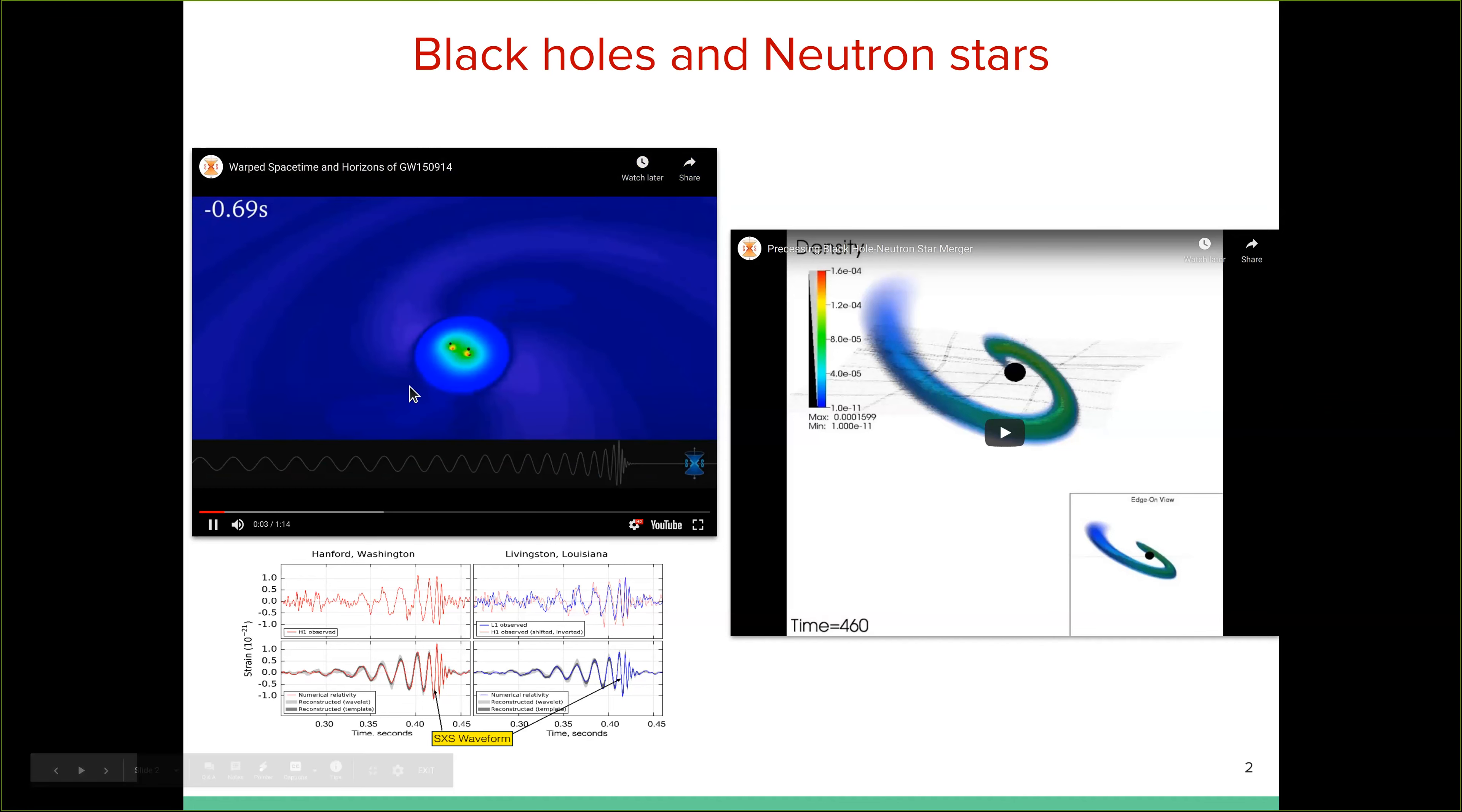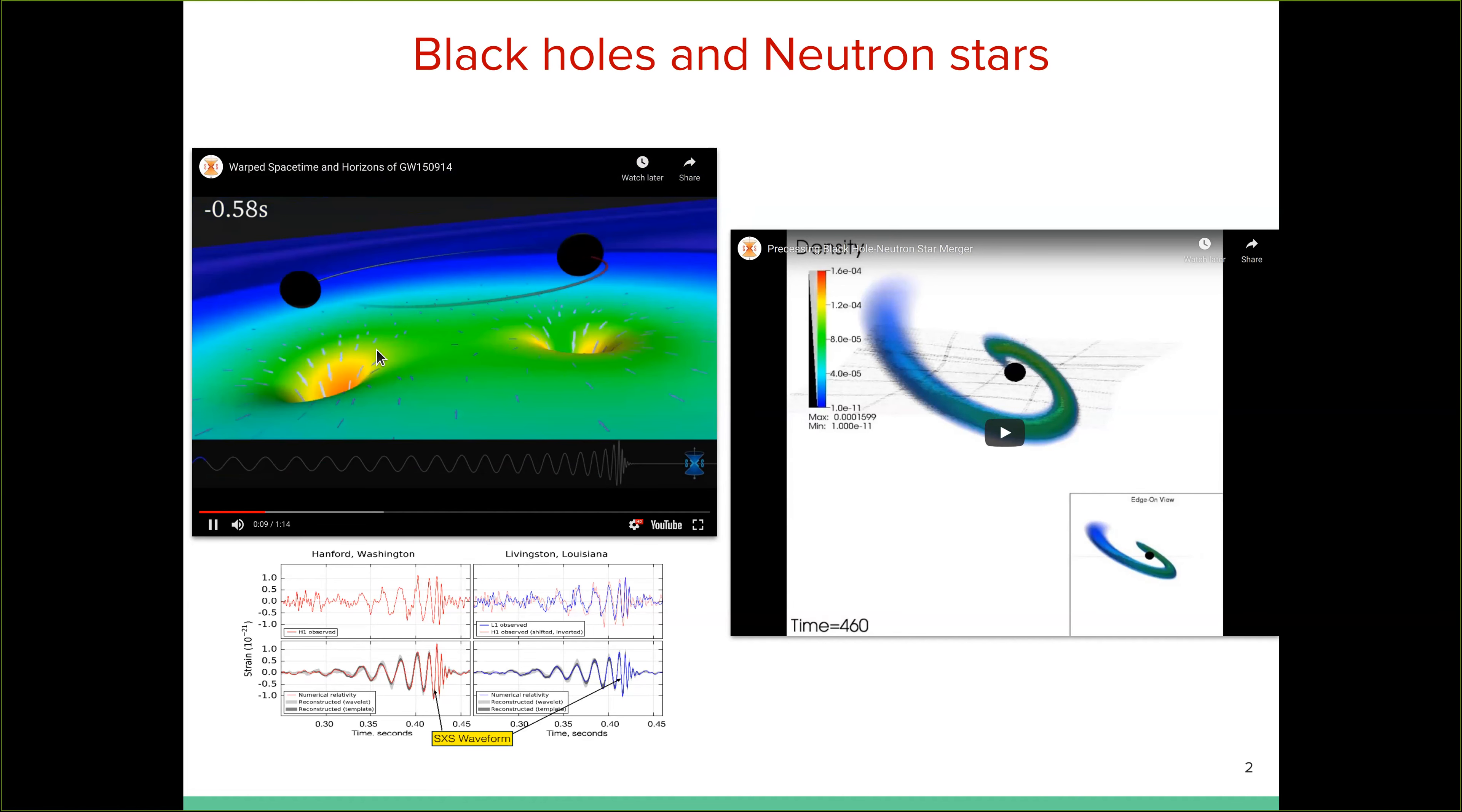So jumping straight into it, numerical relativity is a rather diverse field, and you can tackle many problems in it. The specific problems that we are interested in is the dynamics of compact object systems in the context of LIGO. So for instance, here is a movie that shows a full GR solution of two black holes orbiting each other.